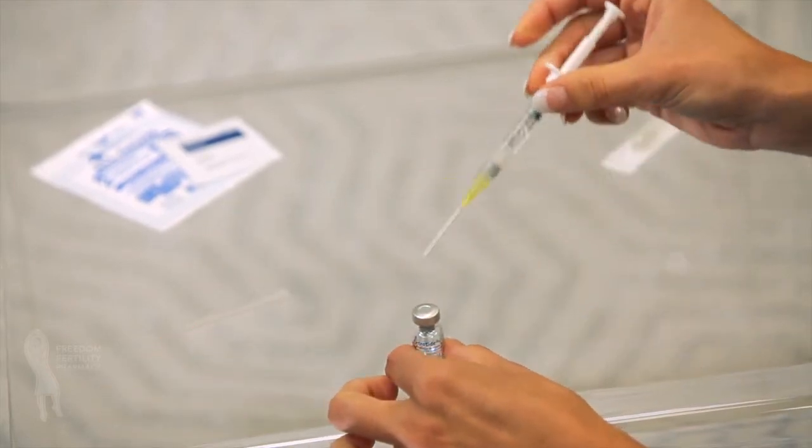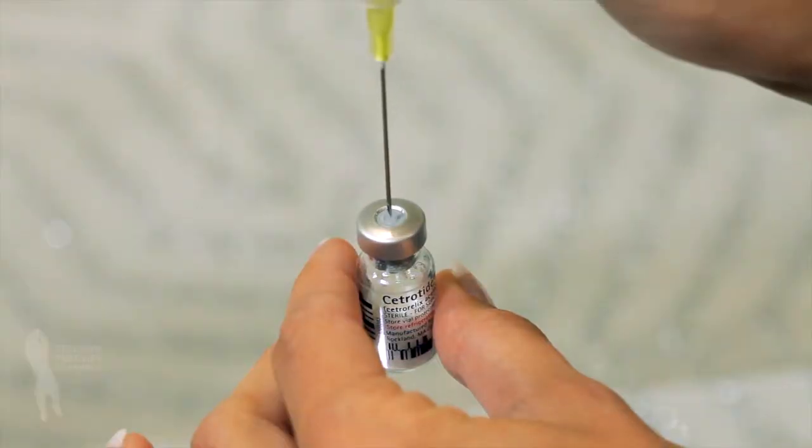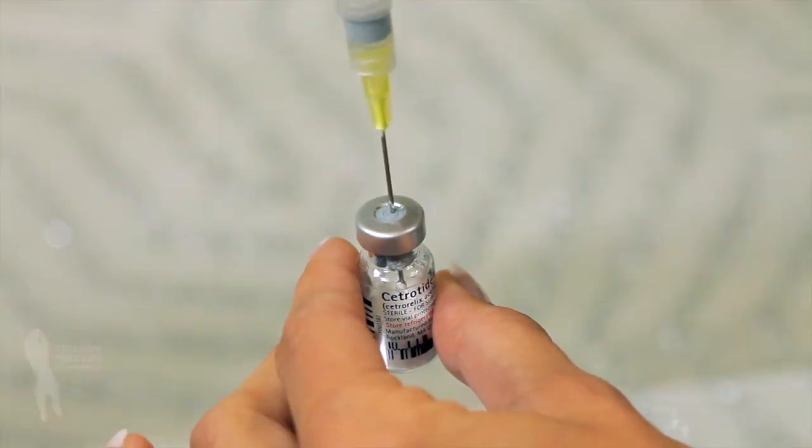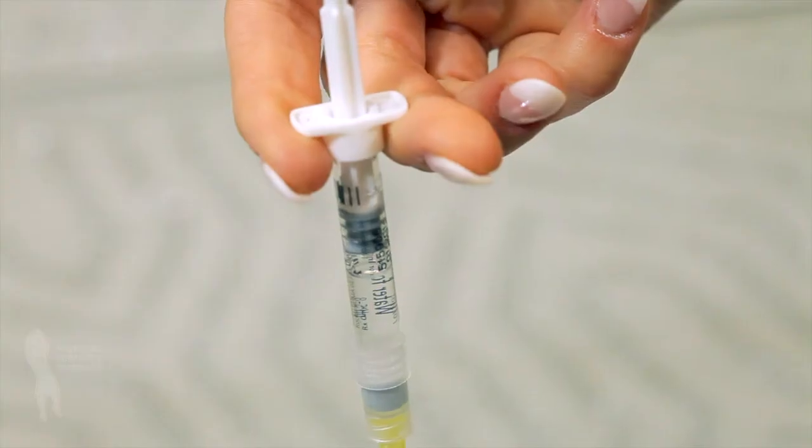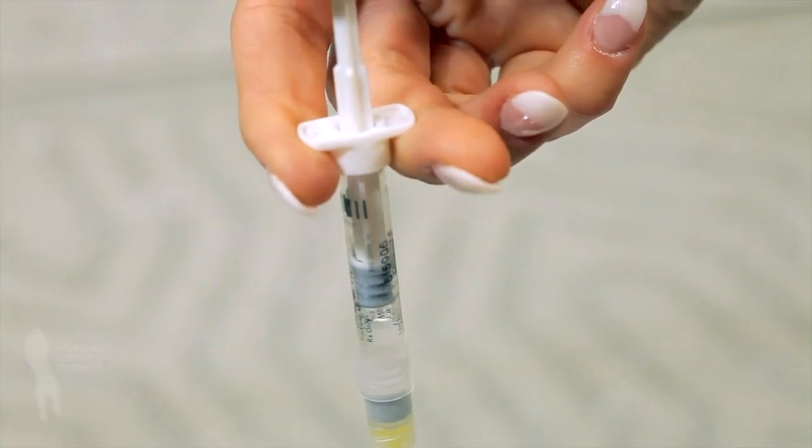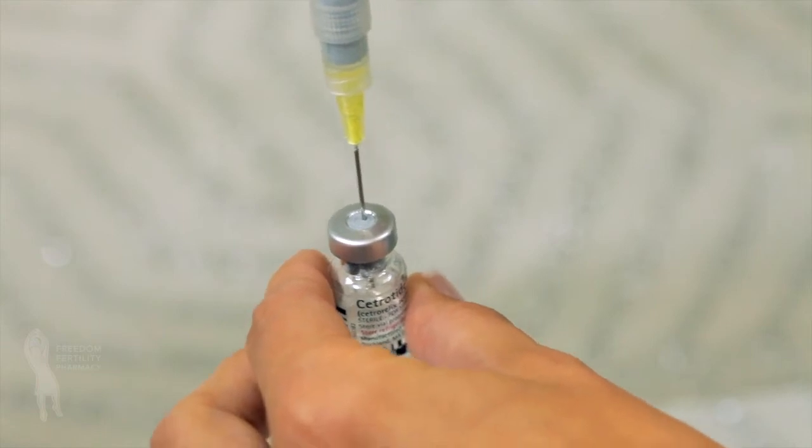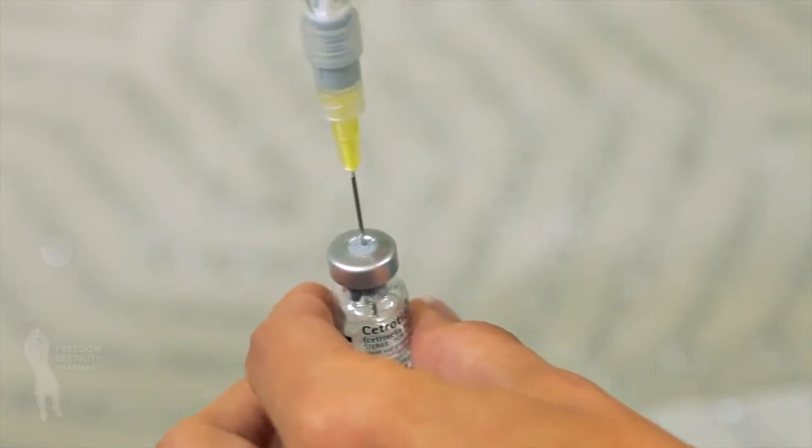With the vial on a flat surface, insert the needle of the pre-filled syringe straight down through the marked center circle of the rubber stopper on the vial. Slowly inject the water into the vial and gently swirl. If bubbles appear, wait a few moments for them to settle.